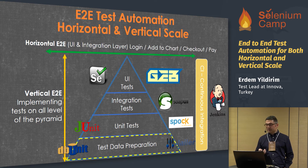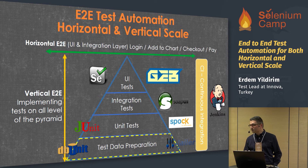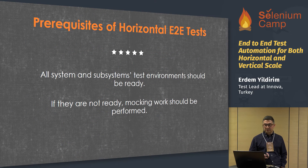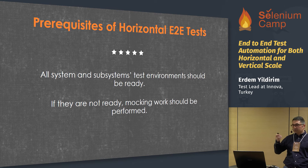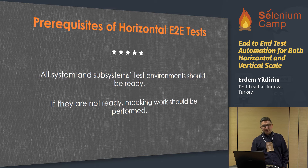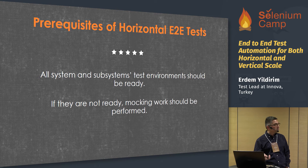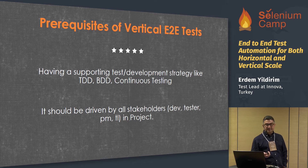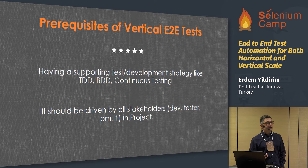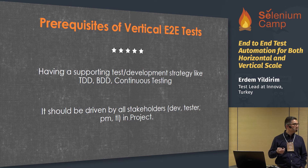Tools can be changed based on the needs — these are the ones we preferred. Prerequisites of horizontal ETU tests: all systems and subsystems' test environments should be ready. If they are not ready, you should mock them. If they are not mockable, you cannot perform horizontal ETU tests. Prerequisites of vertical ETU tests include having a supporting test development strategy like TDD, BDD, or continuous testing, and it should be driven by all stakeholders: business analyst, developer, tester, project manager, and test leader.